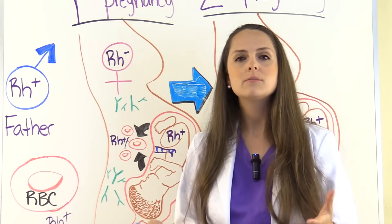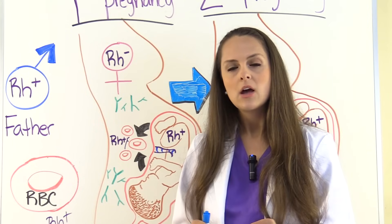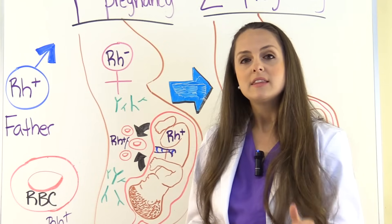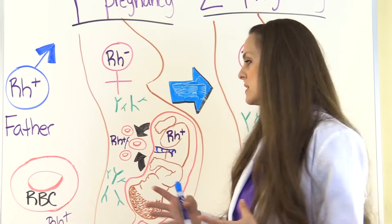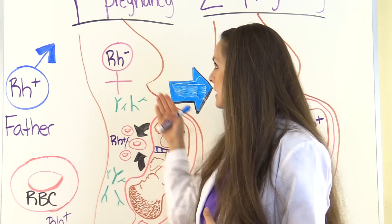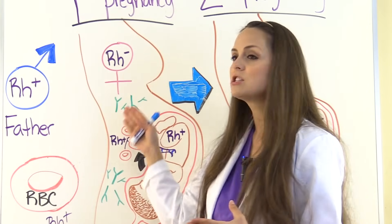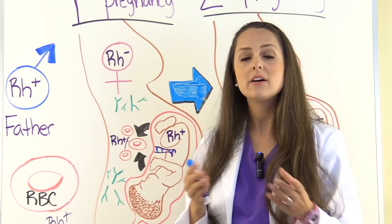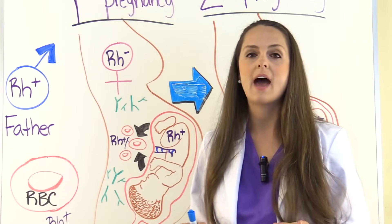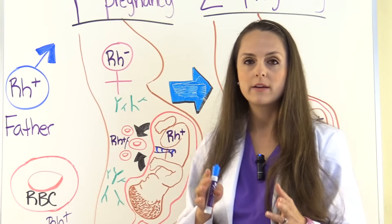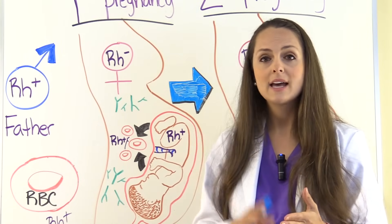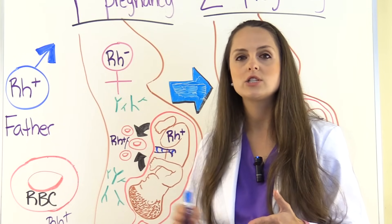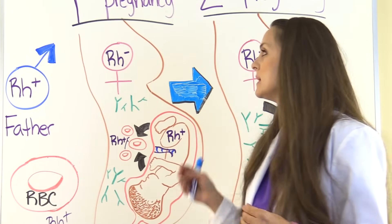Or with an invasive procedure like an amniocentesis, or whatever the patient can have where the blood's going to pass over. The thing is, once that RH positive blood gets into this mama's blood that's RH negative, the mama has become sensitized to it. And as healthcare professionals, we want to prevent that, which is why it's important we give Rogam. We test the mama's blood type early on in those prenatal visits to see what she is.